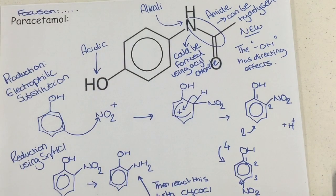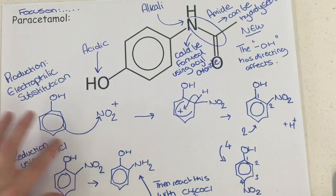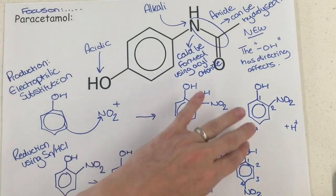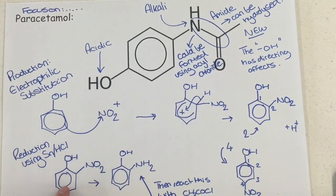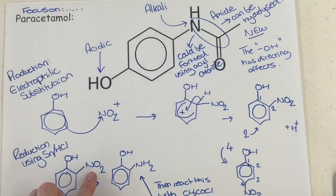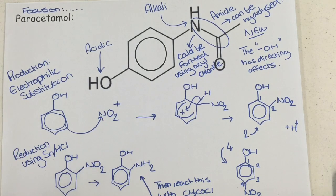If the OH were an electron-withdrawing group, the NO2 would go to position 3. Again, that's brand new to the A level and you need to be aware of it. In my next step, working towards paracetamol, I've taken the position 2 NO2 and I'm going to change it to an NH2. I can do this using tin and HCl, which is a reduction reaction — changing the NO2 to an NH2 using tin and hydrochloric acid.